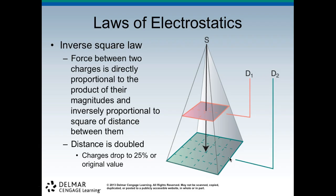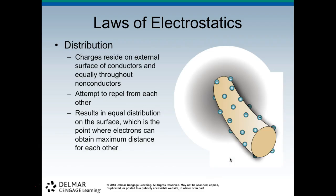If the distance is doubled, charges drop by 25% of the original value — same idea. There's also the law of distribution: charges reside on the external surface of conductors and equally throughout non-conductors. They are always trying to repel from each other, and like charges don't like each other and try to get away. This results in equal distribution on the surface, which is the point where electrons can obtain maximum distance from each other, as you can see here — they are all equally distant because they're repelling each other.